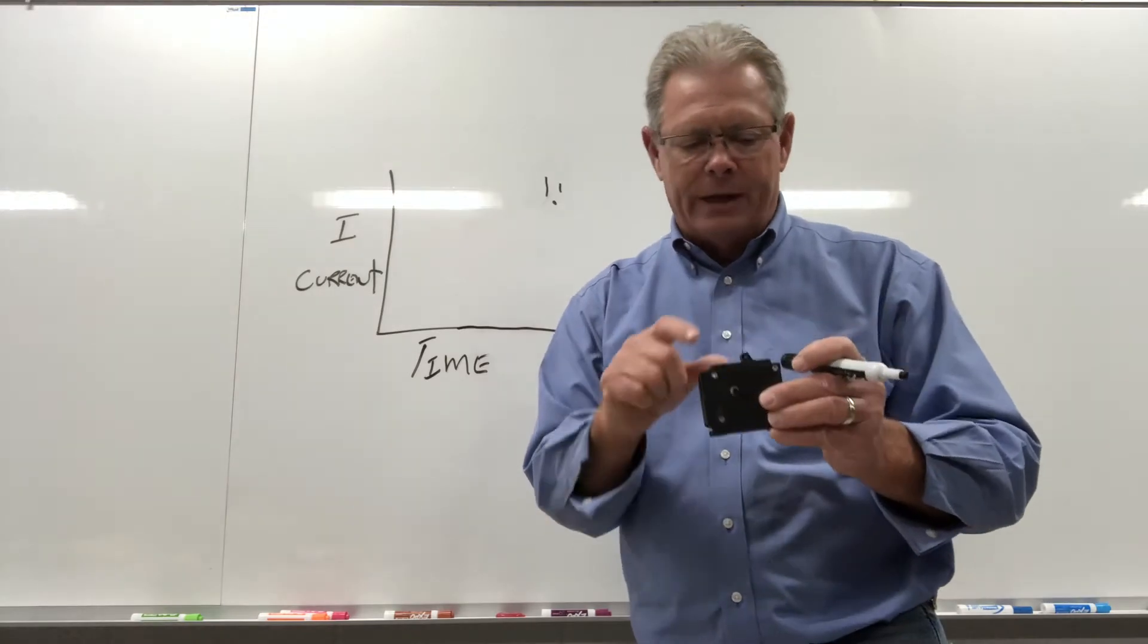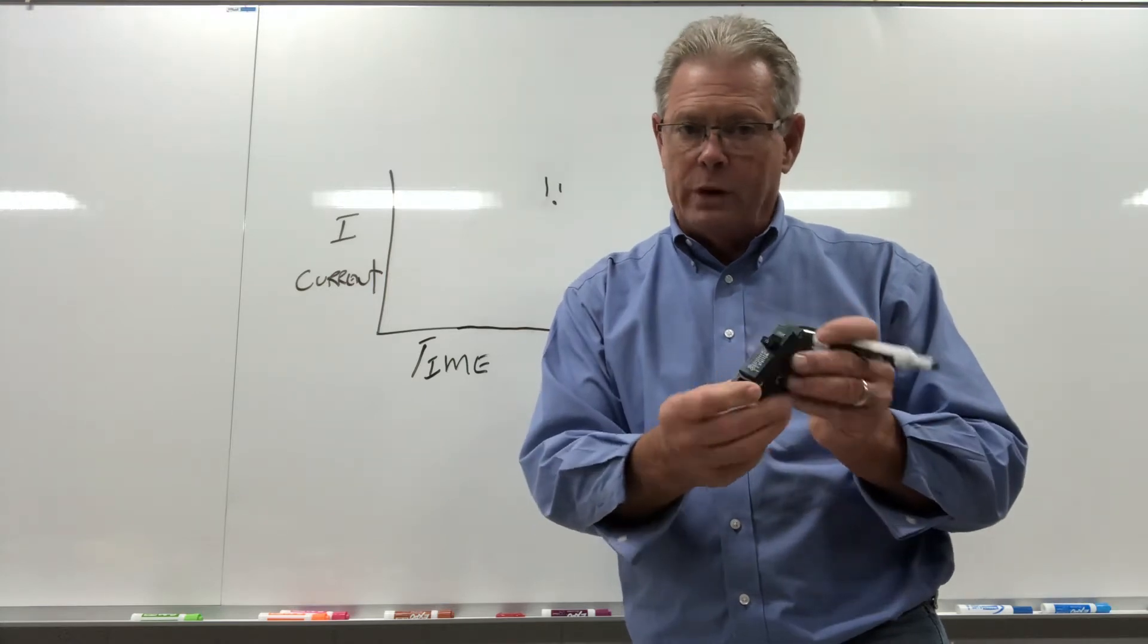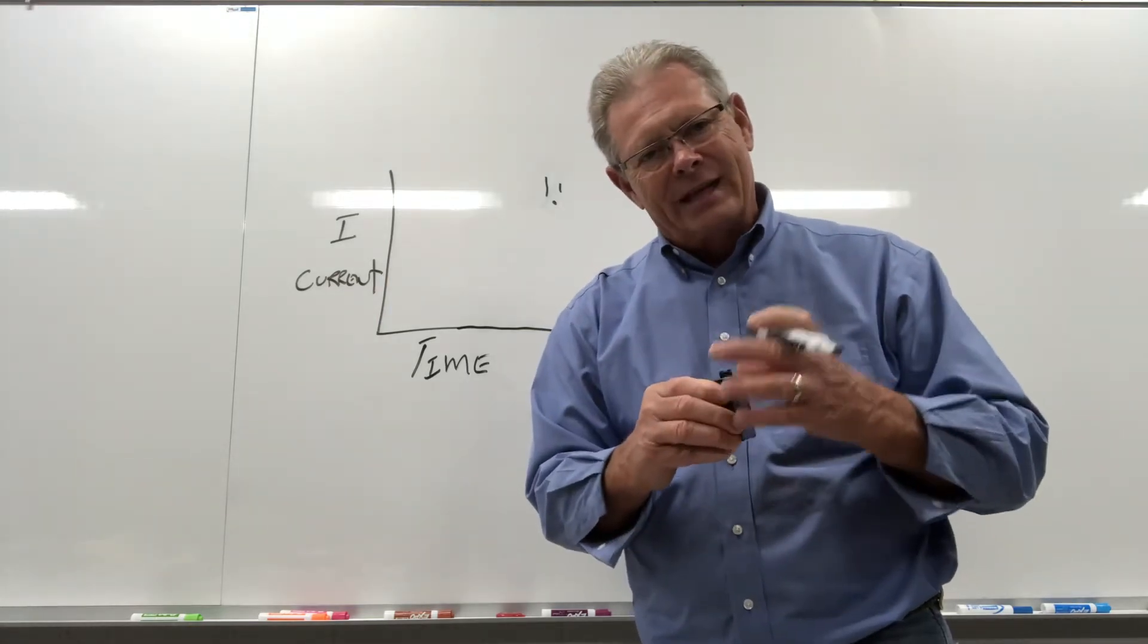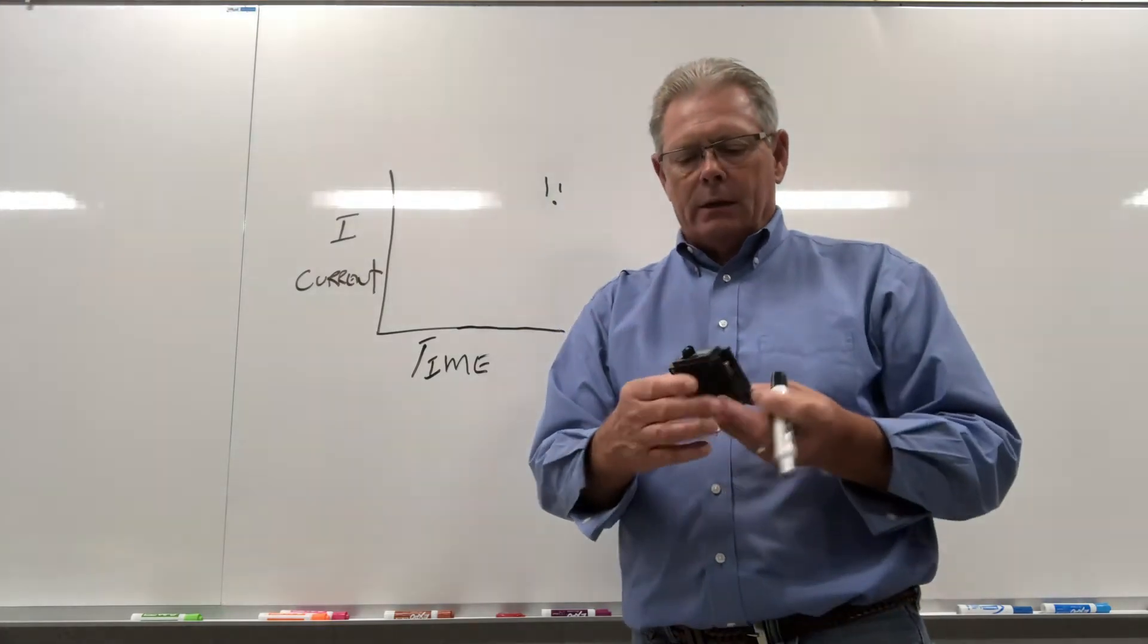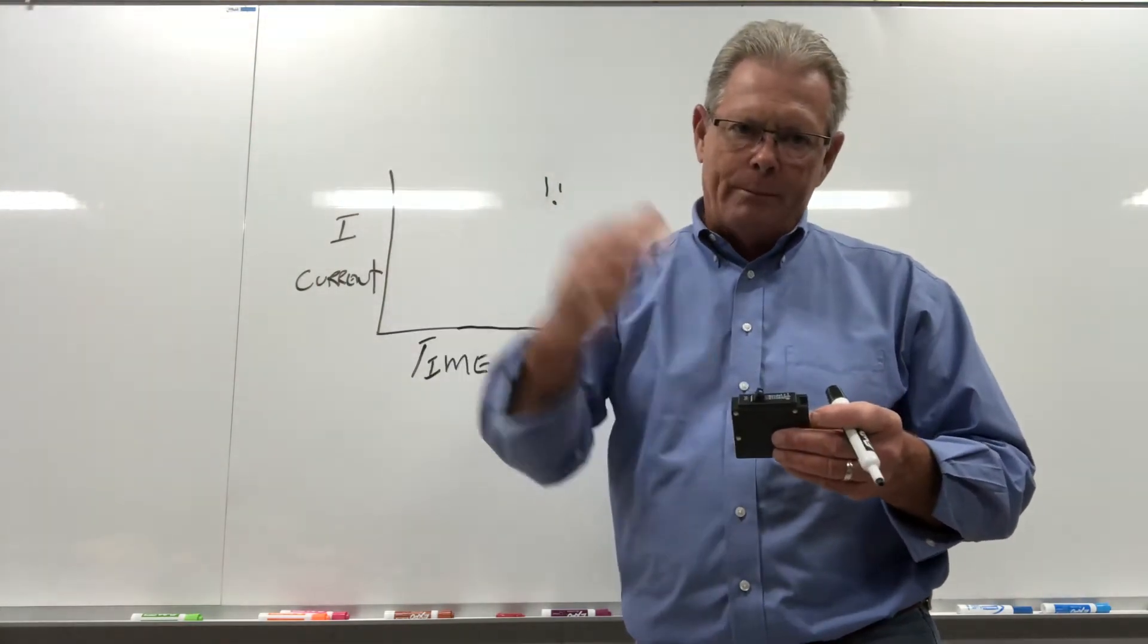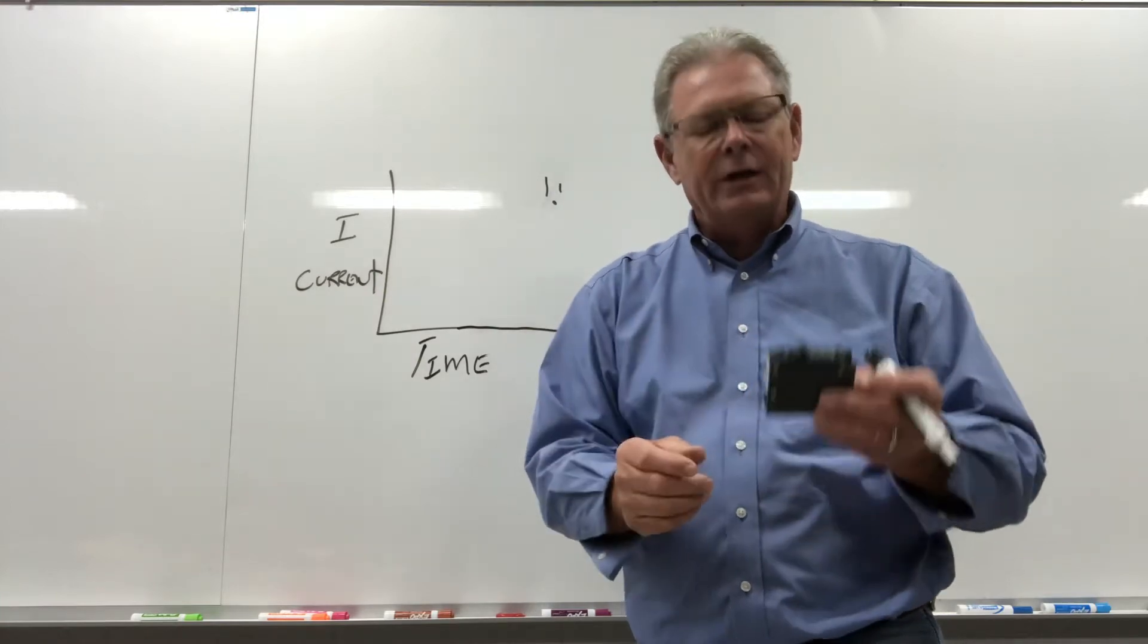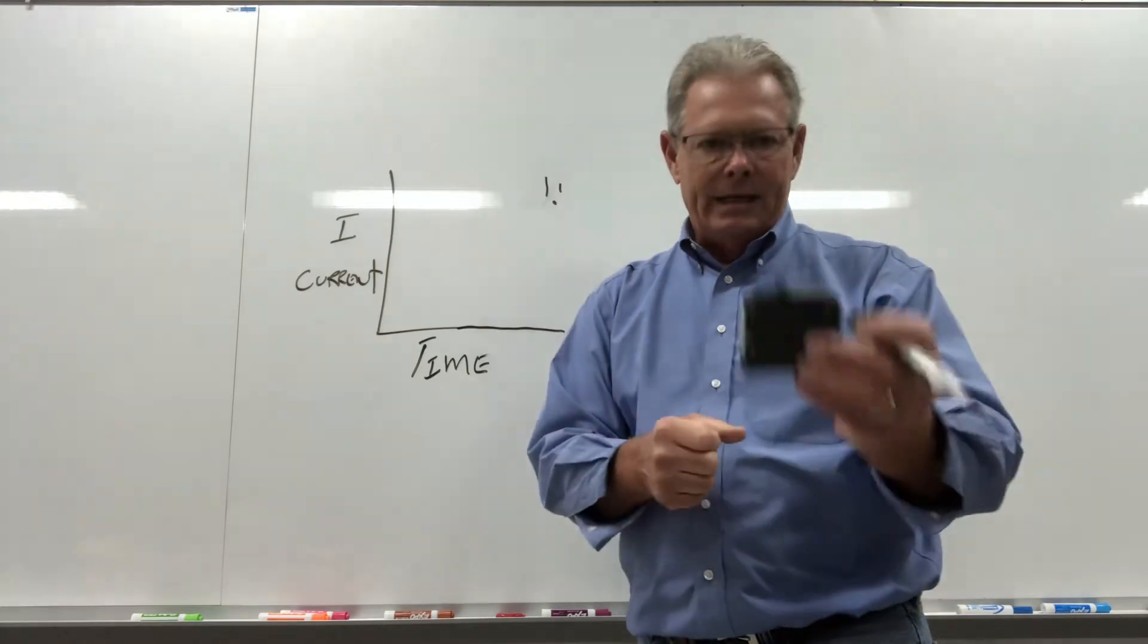And that's where you need an interrupting rating. This breaker has three ratings. The 15 amps is the standard rating. Then this is a 120-240, that's the voltage rating. Then if you look at the side of this, this is 10KA. So it has a 10,000 amp instantaneous current rating or interrupting rating. Whenever the power company makes your overhead drop or your underground lateral into your house, they size the transformer and size the wire size for your feeders so that you'll never see over 10,000 amps under a dead short condition in your house.